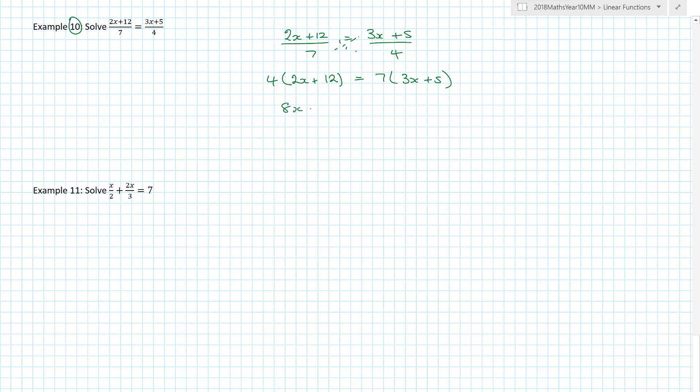4 times 2x is 8x plus 48 equals 21x plus 35. I've got x's on both sides. I need to start moving things around. I'm going to leave the highest x's alone. I've got the highest on there. I'm going to get rid of this 8x by taking away 8x from both sides. That leaves 48 equals 13x plus 35. The x is on its own, so I'm going to get rid of the 35 by taking away 35 from both sides. 13 equals 13x, so x equals 1.